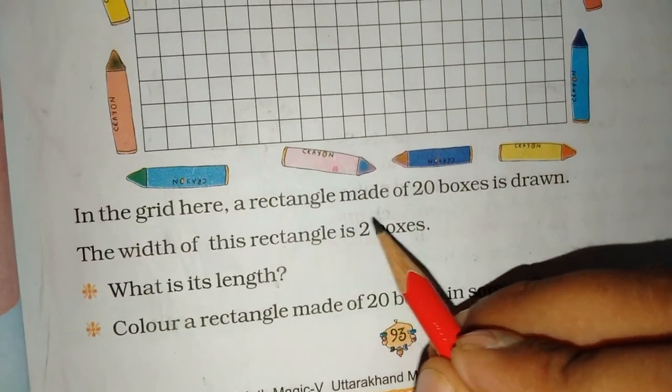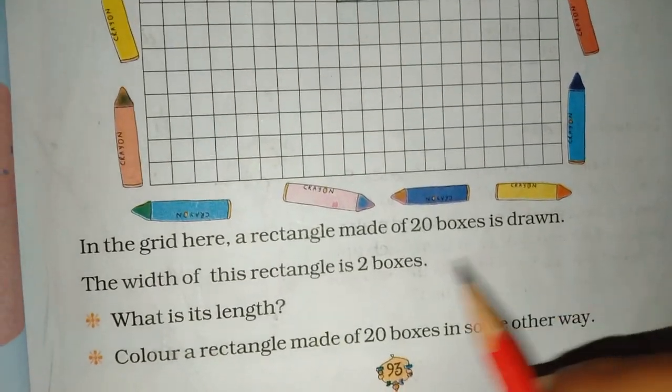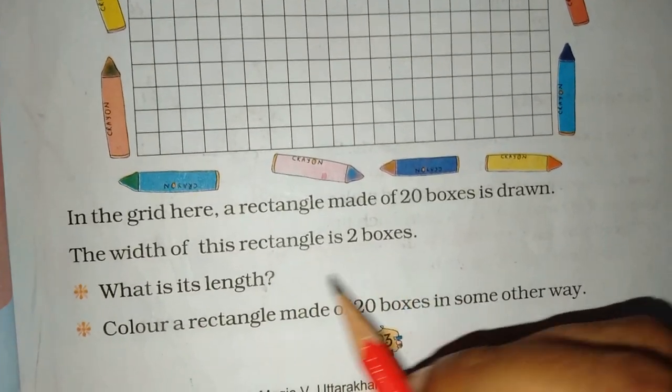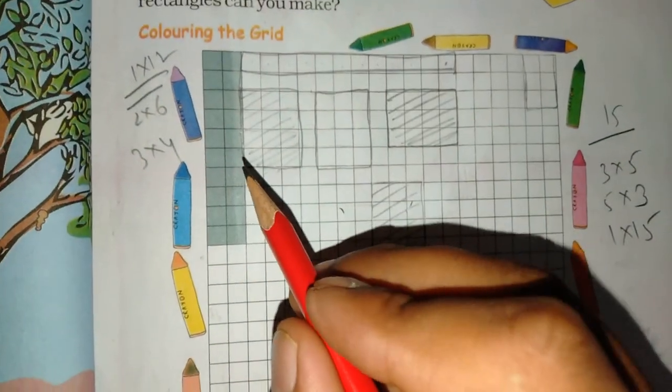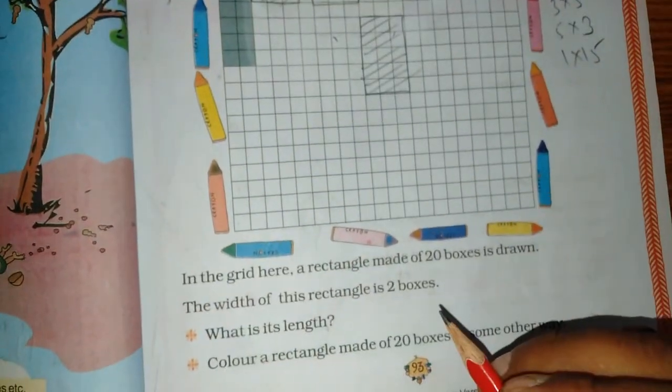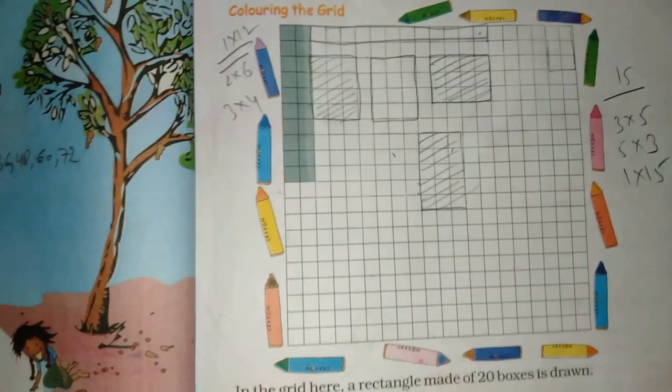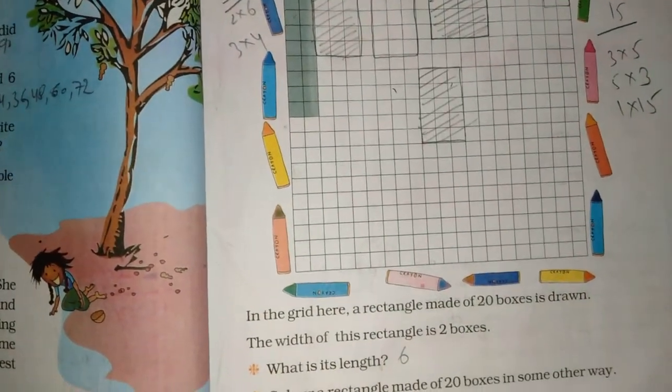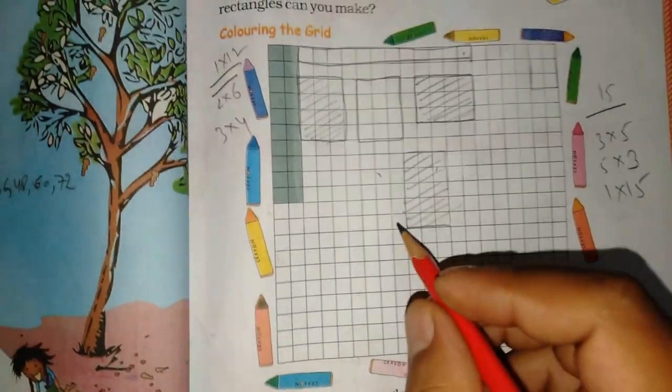In the grid here, a rectangle made of 20 boxes is drawn. The width of this rectangle is two boxes. What is its length? Now the rectangle was made. The width is 2. How much is it? Length is 6. Color a rectangle made of 20 boxes in some other way. We made this.